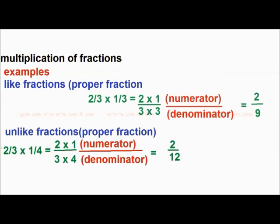Examples. Like fractions, also proper fraction: 2 by 3 multiplied by 1 by 3. Here numerators are 2 and 1; multiply separately, that becomes 2. And denominators 3 and 3; multiply 3 into 3, that is 9. Keep it as denominator. So, 2 by 9. Therefore, 2 by 3 into 1 by 3 becomes 2 by 9.